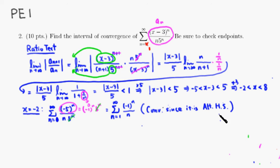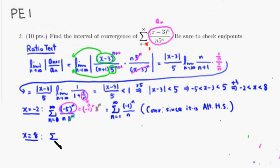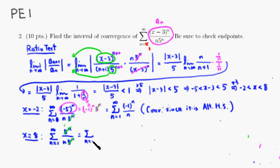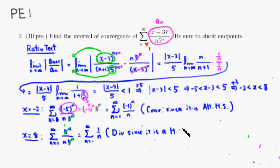Now how about x equals 8? If you plug in 8, you get the summation from n=1 to infinity of (8 minus 3) to the n over n times 5 to the n — so 5 to the n over n times 5 to the n. The 5 to the n cancels and you end up with the harmonic series, which diverges.